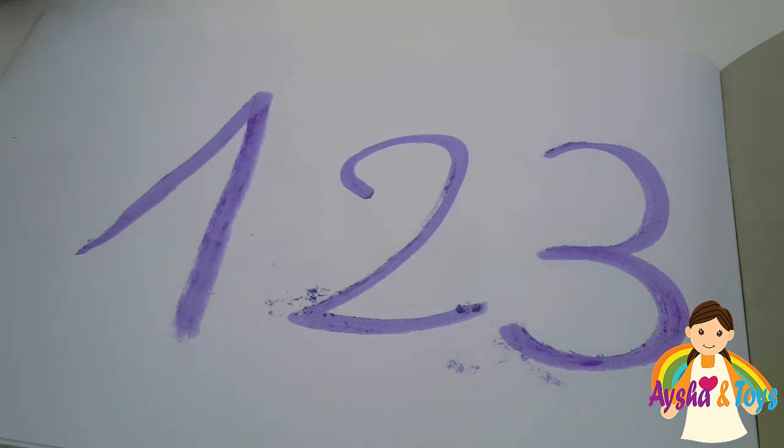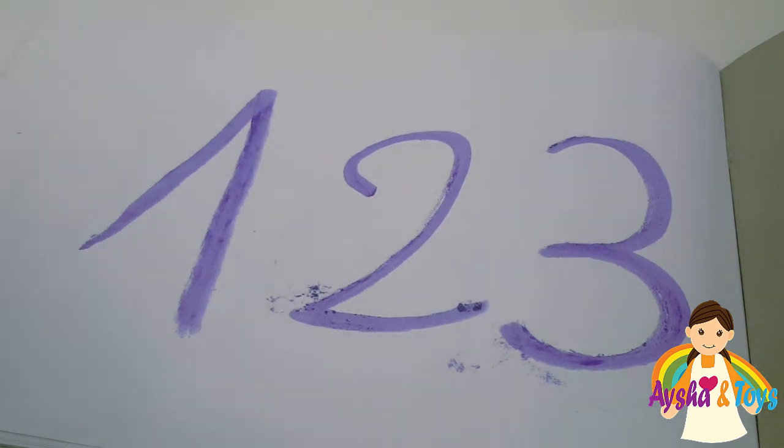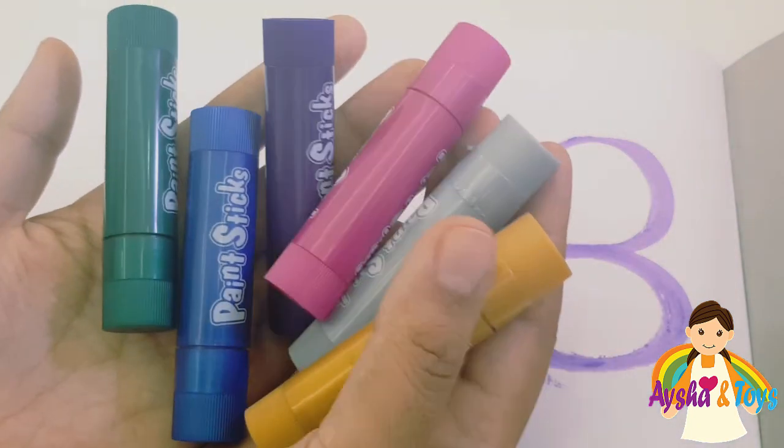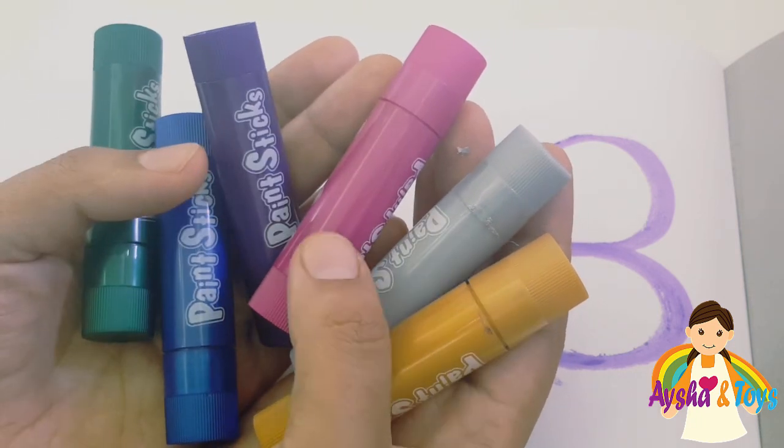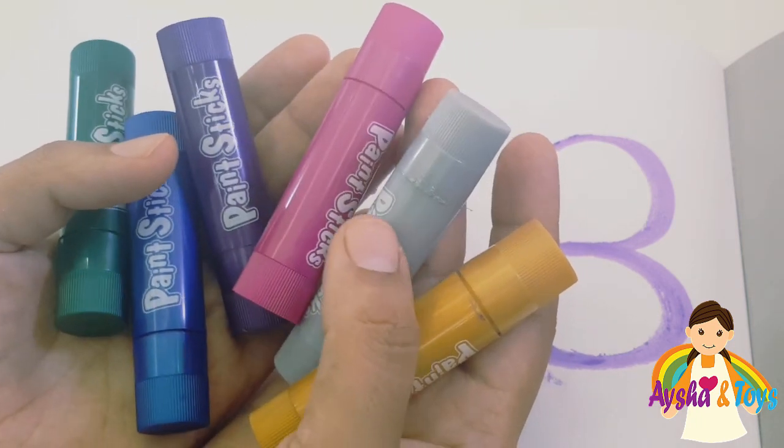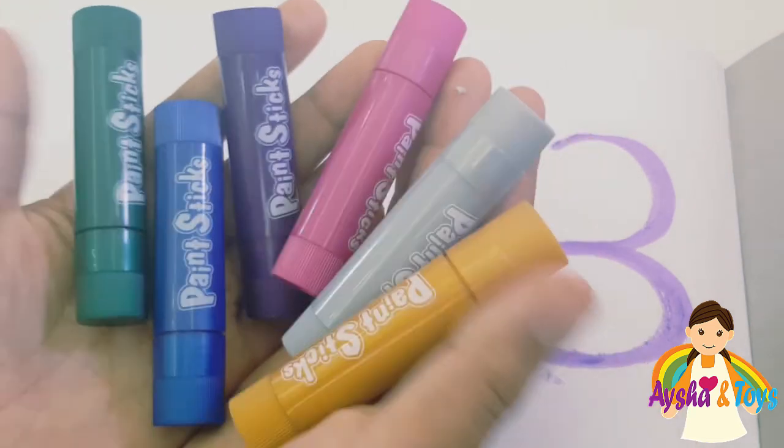Today, we'll learn numbers from one to fifteen. And, we'll learn these colors. We have green, blue, purple, pink, silver, and golden. Five colors.